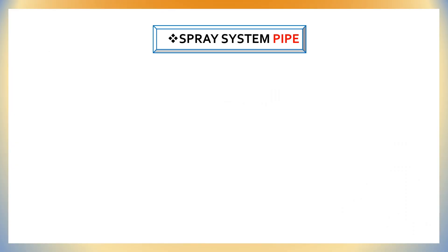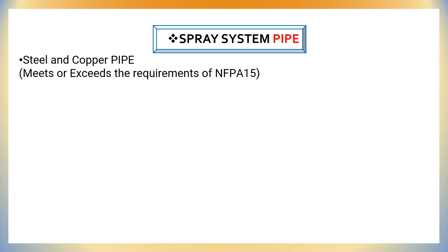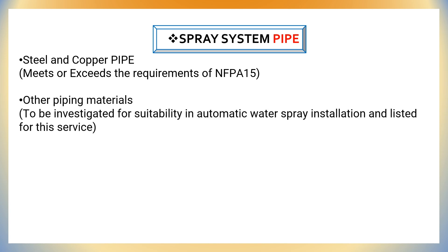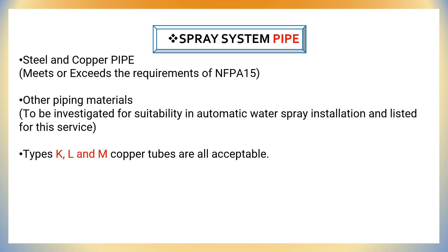The first system component is spray system piping. Steel and copper pipes can be used as per NFPA 15. Other piping materials can also be used; however, they have to be investigated for proper suitability and listed for this service. Copper tubes — which includes Type K, Type L, and Type M — are all acceptable as per NFPA 15.